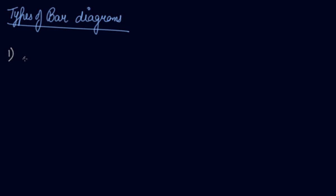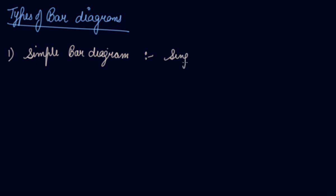In this video, we will be studying about the types of bar diagrams. Number one is your simple bar diagram. Simple bar diagrams are those diagrams which are based on only a single set of numerical data.